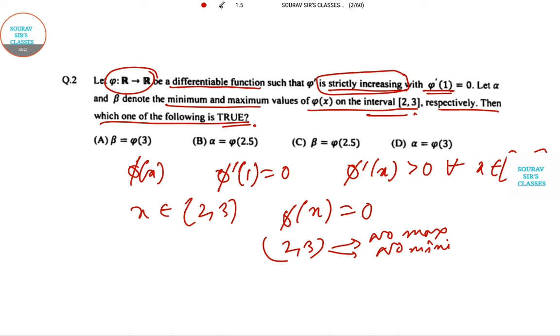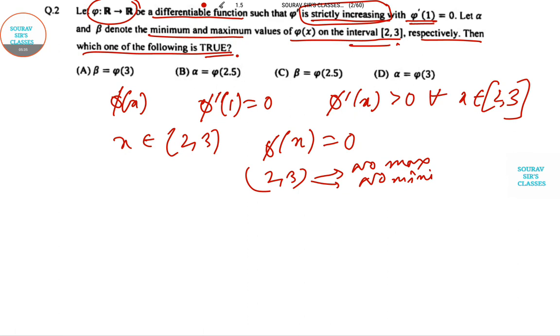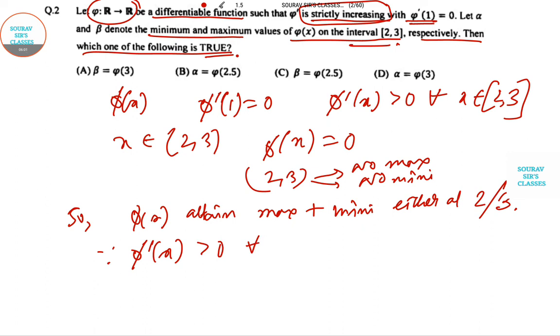φ(x) attains its maximum and minimum values either at 2 or 3. Since φ'(x) > 0 for all x in [2,3], φ(3) is the maximum and φ(2) is the minimum.